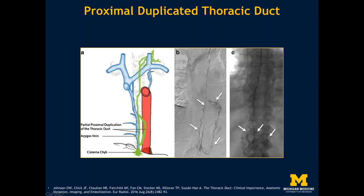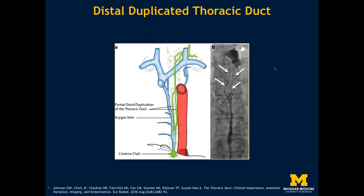Here's an example of a duplicated thoracic duct. The cisterna chylae gives rise to multiple channels — either a proximal duplication, where it arises closer to the cisterna chylae and then converges into a single thoracic duct, or a distal duplication. The importance of these variants is that if just one channel is treated in the case of leakage, leakage may still persist. So it's important to identify these variants and when embolization is pursued, embolize them completely.